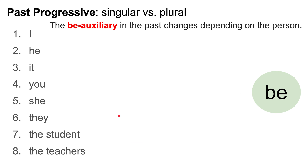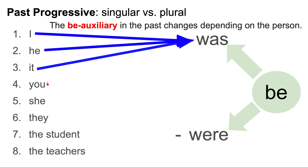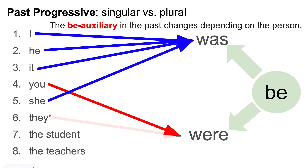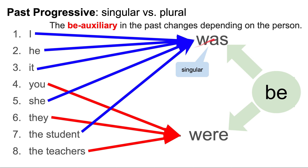Now let's look at the BE auxiliary and how it changes depending on the person. The BE auxiliary has two forms: was and were. I was, he was, it was, you were, she was, they were, the student was, the teachers were. If the subject is singular — I, he, it, she, the student — we use 'was.' If the subject is plural or 'you' — you, they, the teachers — we use 'were.'